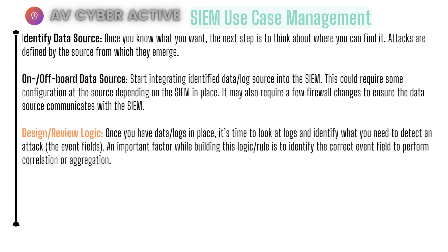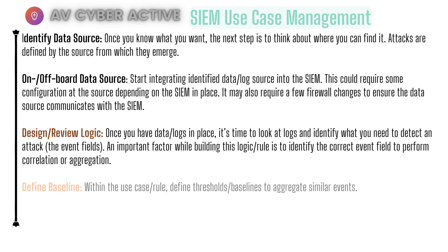Next in SIEM use case management is to design and review rule logic. Once you have the data sources in place, it's time to look at the logs and identify what you need to detect an attack, like your field of events. It's also important to identify and use correct fields so you can perform proper correlation and aggregation. Next is defining the baseline — this is where use case patterns and rules are defined so that you can define your thresholds and baseline to aggregate similar events.